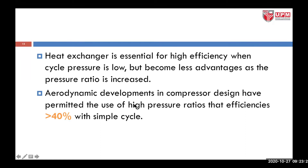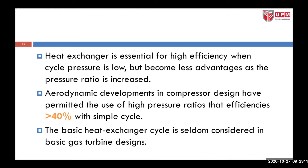Comparing figure 1.1 — a simple gas turbine cycle — to figure 1.4, with advanced aerodynamic development in compressor design in terms of different blade angles and numbers of blades, the compressor ratio can be increased and the overall performance of the gas turbine engine can be increased by 40%. The basic heat exchanger cycle is seldom considered in a basic gas turbine design because, even though the efficiency can be increased by 40%, the power output is reduced by 10%, making the advantage quite small compared to the weight penalty and other related costs.